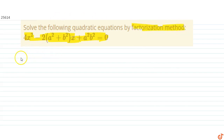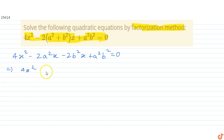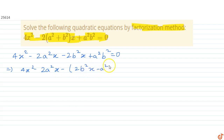We can write this given equation as 4x² minus 2a²x minus 2b²x plus a²b² equals 0, which is the same as 4x² minus 2a²x minus (2b²x minus a²b²) equals 0.